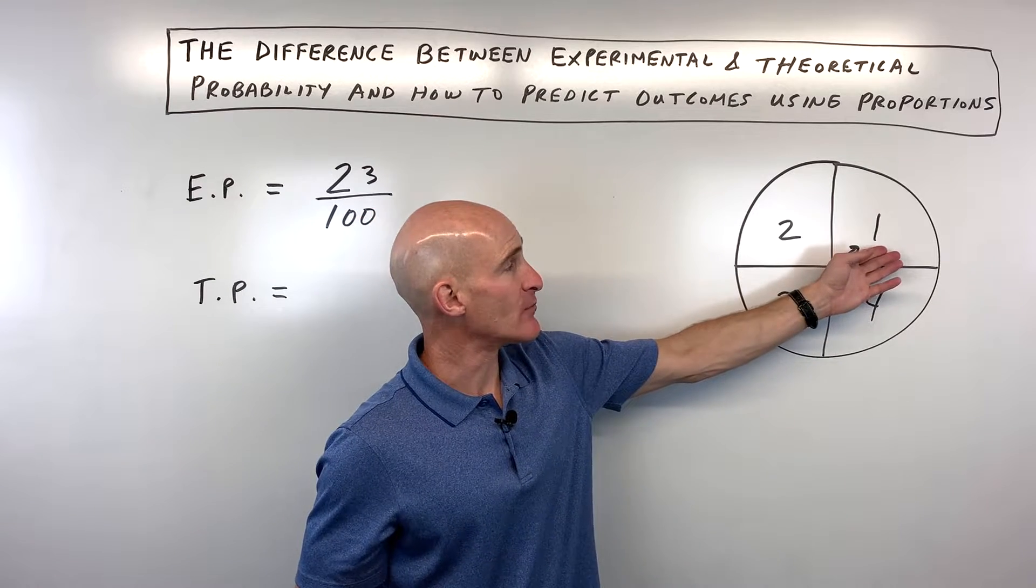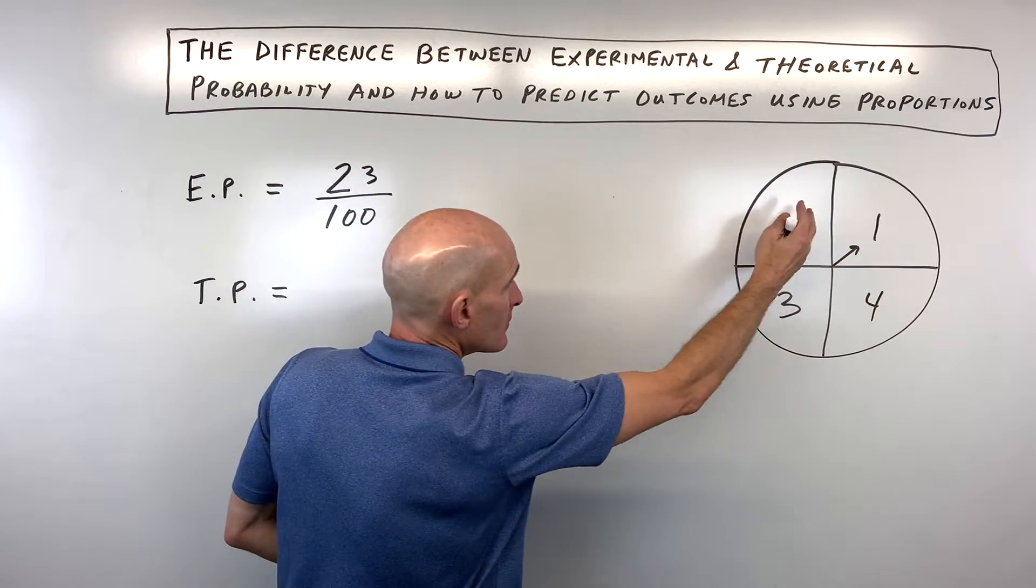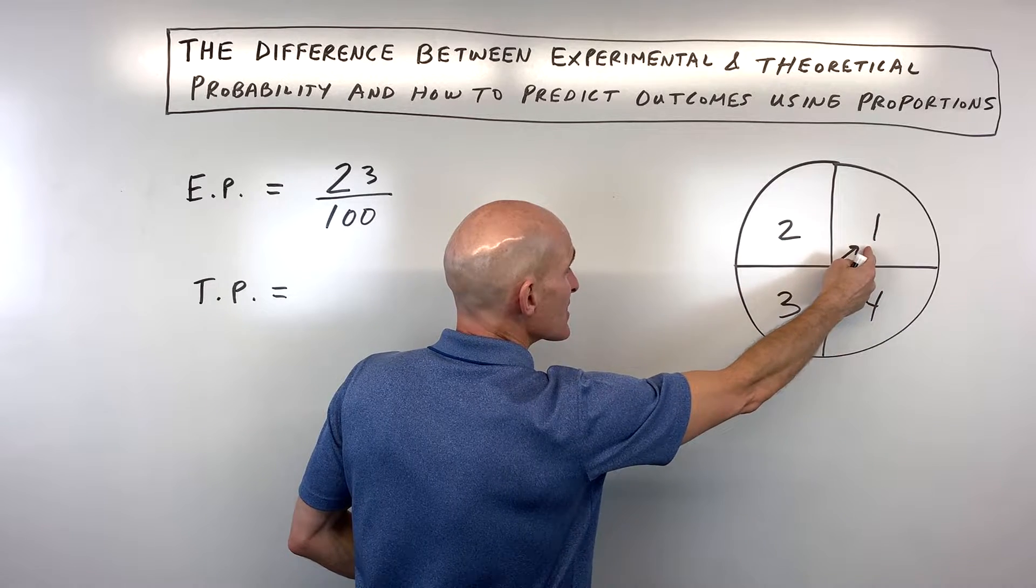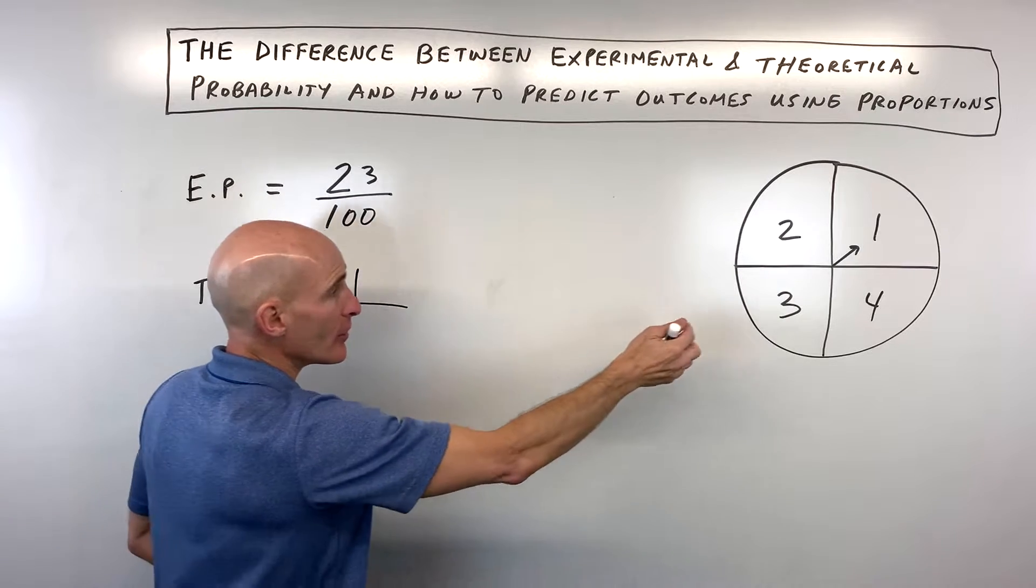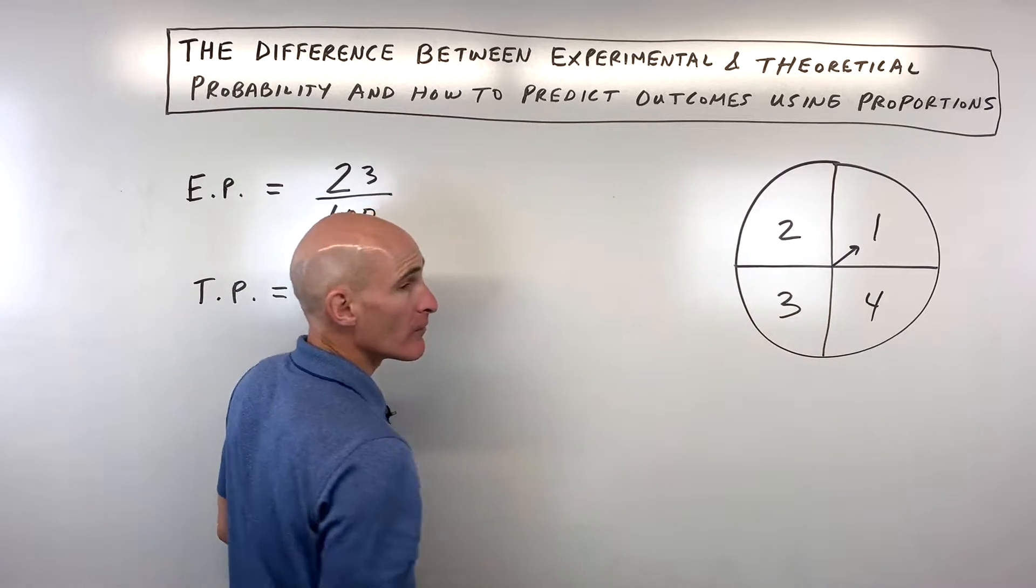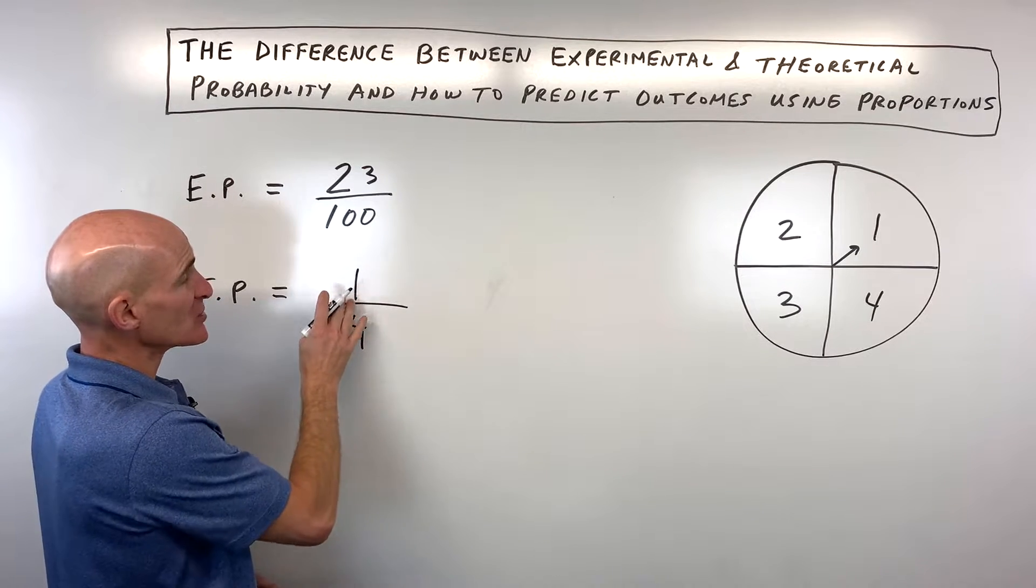In theory, what's the probability that we land on one? Well, what we do is we look at the number of successes there are, which in this case, it would just be one possible way of getting what we want out of one, two, three, four possible outcomes. So we would say, theoretically, the probability is one out of four.